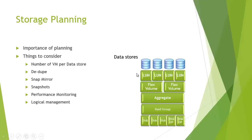Both SnapMirror and snapshots happen at the flex volume level, and as we have a one-to-one ratio between flex volume, LUN, and data store, if there are VMDKs you do not want snap mirrored — such as archive data or data with a large change rate — make sure you put those in a data store not associated with SnapMirror. Likewise for snapshots: I don't particularly like snapshotting Exchange servers, so I'd make sure database and log files are in a data store relating to a flex volume that does not have snapshots turned on.